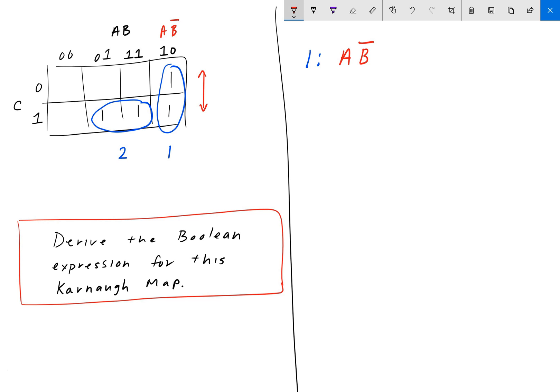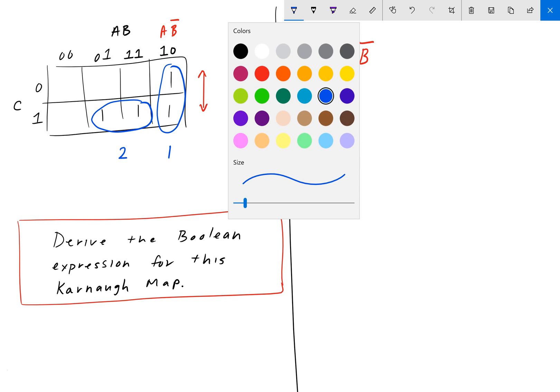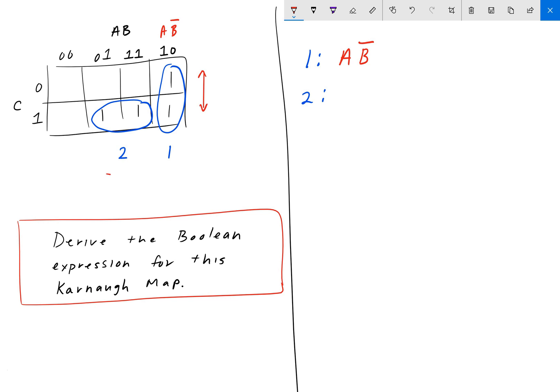And for group 2, we do the same thing. We want to find what doesn't change. So if we look left to right here, we see that C remains 1 in this box and in this box. And if we look at A and B, we see that A is 0 and then it changes to A equals 1, so we don't want that. But here, we got B equals 1, B equals 1. B stays the same, C stays the same.